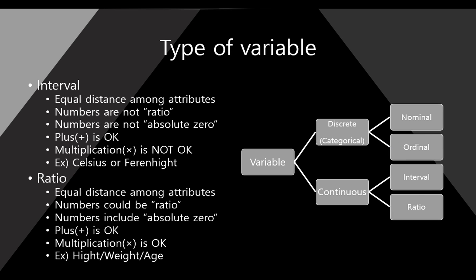And interval ratio. Usually the numbers, numerical numbers are interval or ratio. However, in my experience, actually, I think most numbers are ratio, not interval. Interval variable is very, very rare. Here, the interval variable is equal distance among attribute. And numbers are not ratio. Numbers are not absolute zero. So, you can add your variables, interval variables. The plus is okay. But multiplication is not okay. For example, as I know, the interval variable is, the representative variable is Celsius and Fahrenheit. But this is not general, I think.